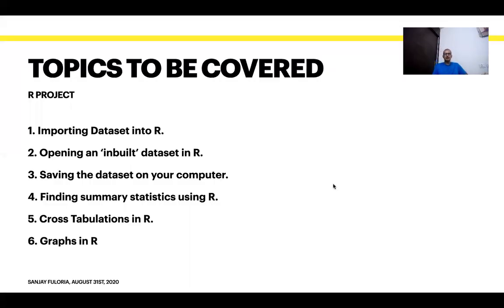There are essentially six things that we are going to cover today. We will start with importing datasets into R — that's the most basic thing. Then I will show you inbuilt datasets in R, how to load them, and how to save them to your computer. The next step will be to find summary statistics using R, then cross tabulations, and finally I will show you a couple of graphs which you can build using R.